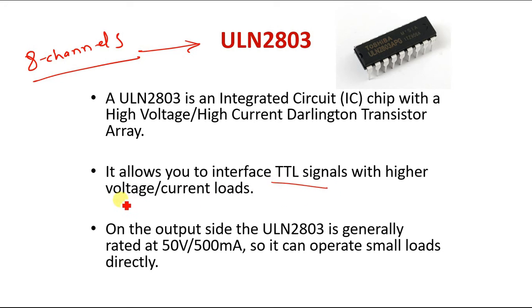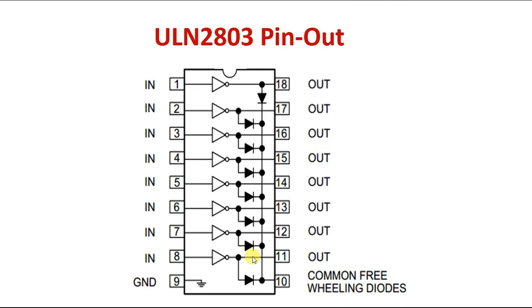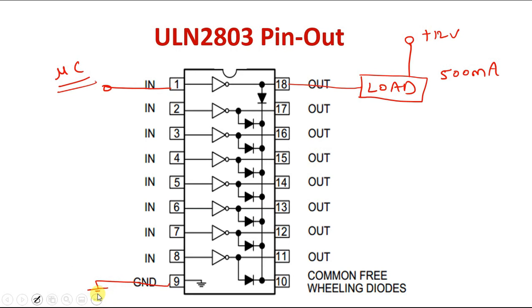It allows you to interface TTL signals with higher voltage and current loads. On the output side, the ULN2803 is generally rated at 50 volt 500 milliampere, so it can operate small loads directly. Let us see how actually it operates. So this is how the internal construction of ULN2803 is and let us see how it functions. It functions exactly like your transistor switching circuit except this is where you will connect the second point of your load. Instead of collector, you will connect it to the out pin of ULN, let us say plus 12 volt that goes here and this pin goes to microcontroller. You can have maximum 500 milliampere current flowing through 12 volt through load and pin number 9 has to be externally connected to ground.